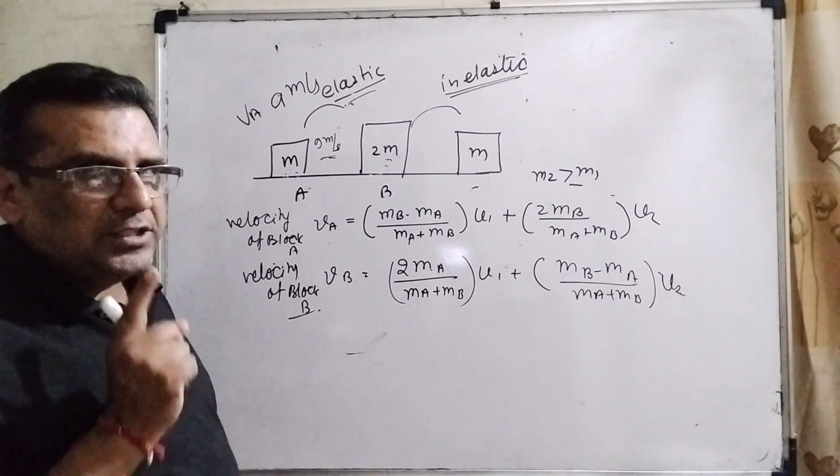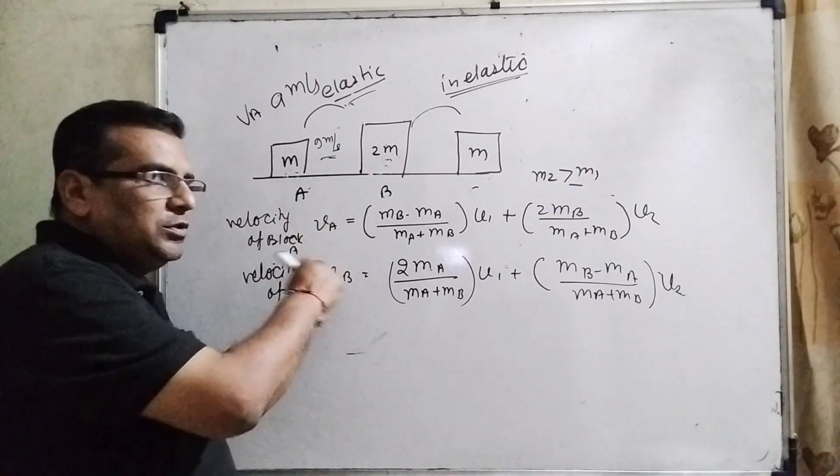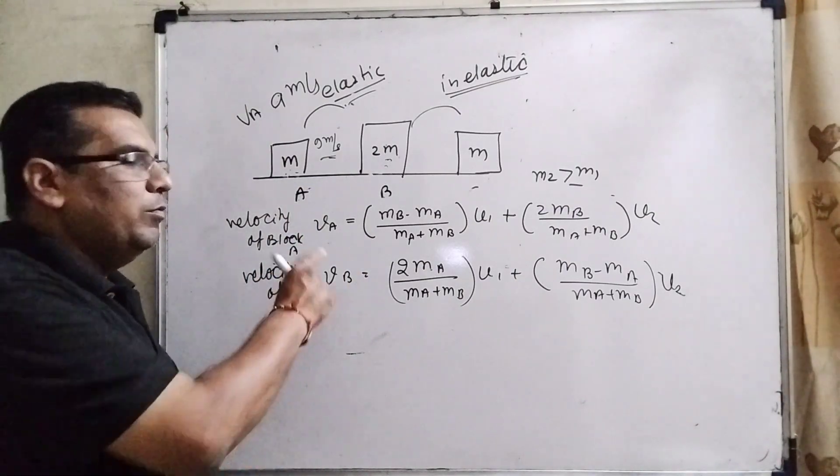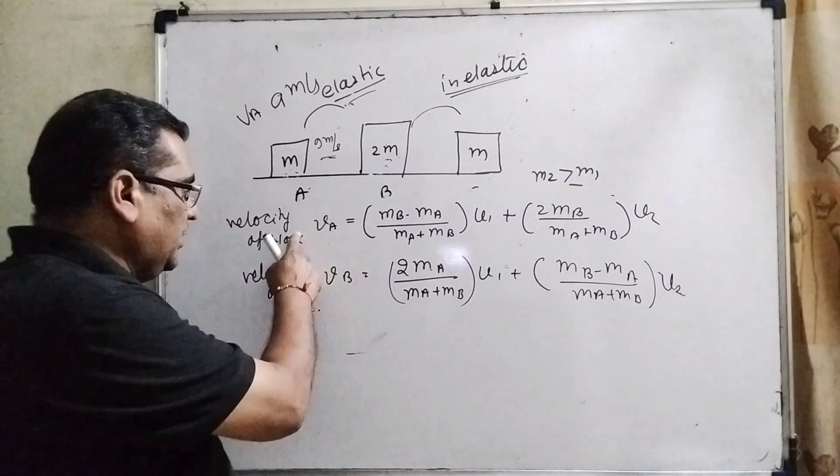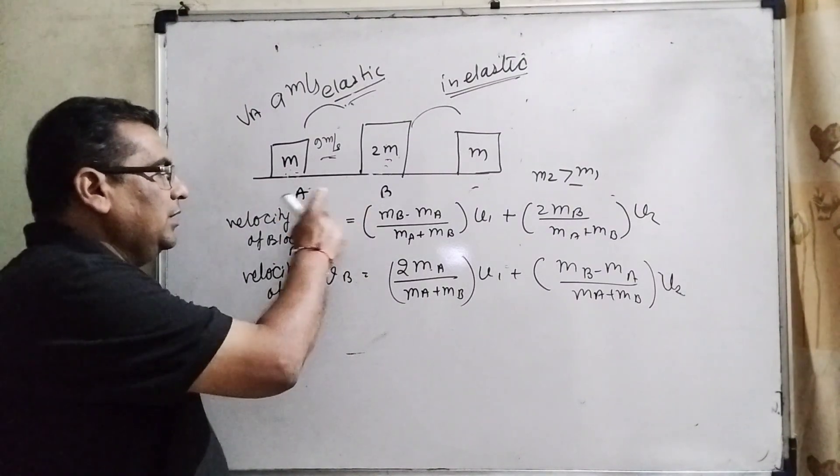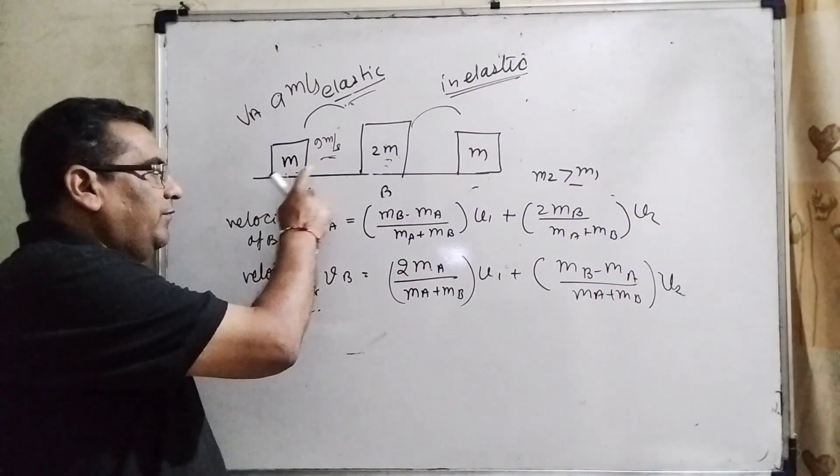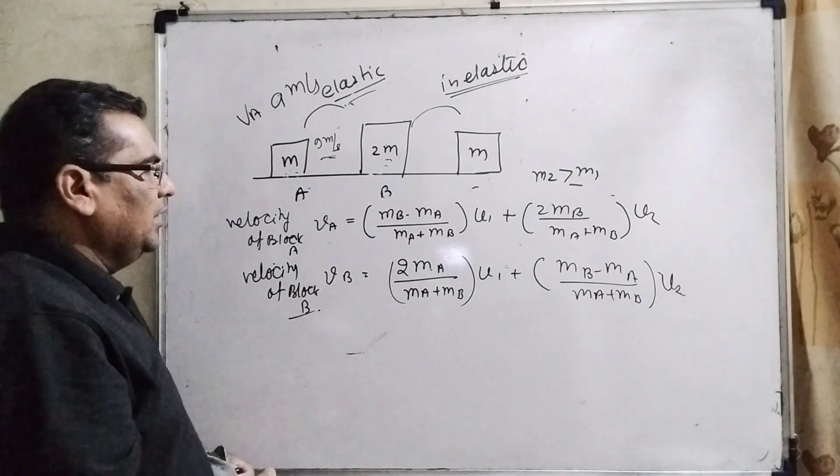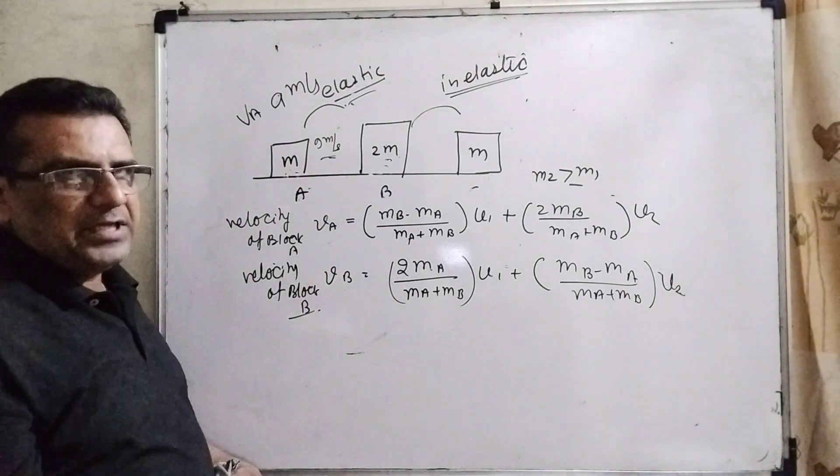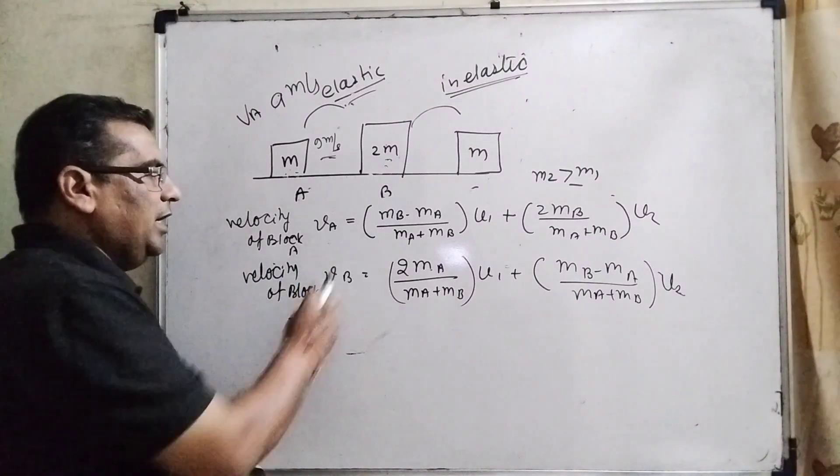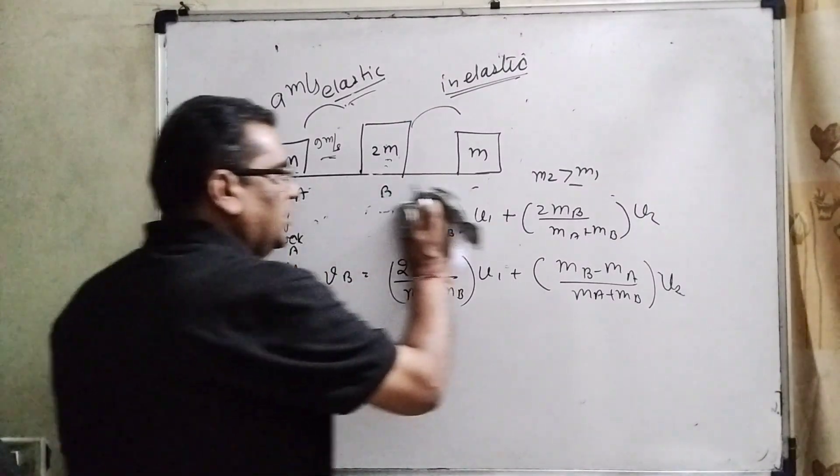So therefore, it is very important. We can't get the velocity by using only laws of conservation of momentum. So therefore, we have to use these two formulas for getting the velocity of first and second. But here we have given already 9 meter per second of first velocity, means UA is given. So therefore, it is not used.